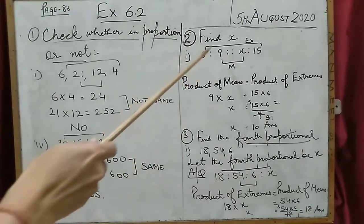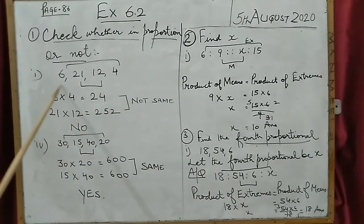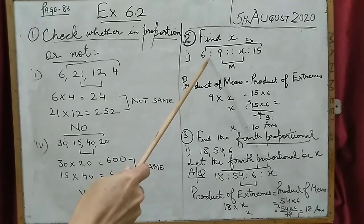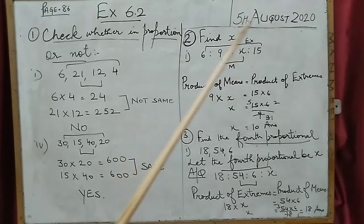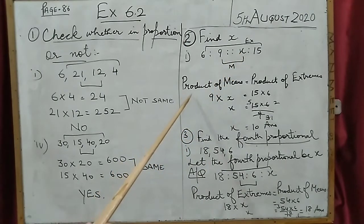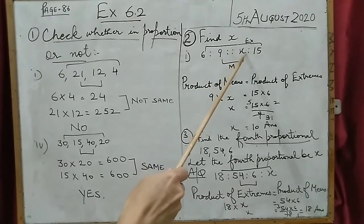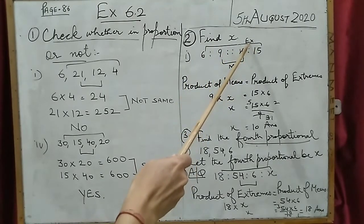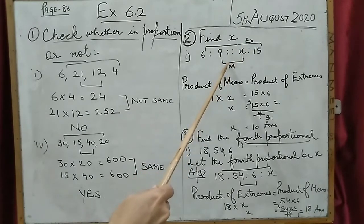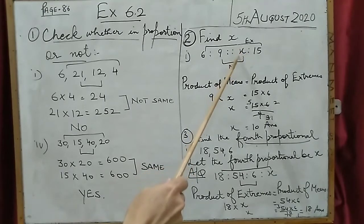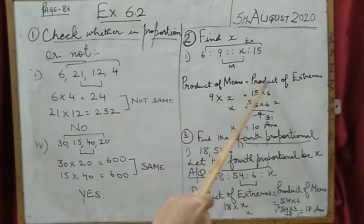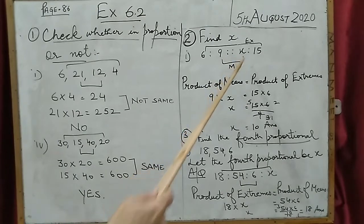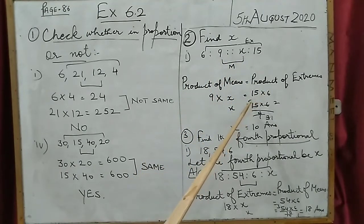Coming to the second one — find x. Here the sum is given in ratio: 6 is to 9 proportionate to x is to 15. We have to find the value of x. Using the formula product of extremes equals product of means: identify where x is — x is in the means. So we write product of means on one side: 9 multiplied by x. Product of extremes on the other side: 6 multiplied by 15.